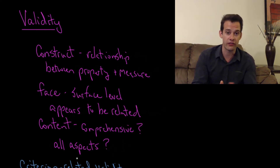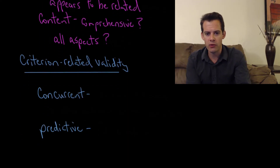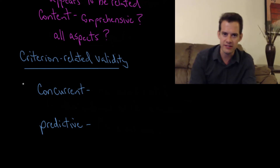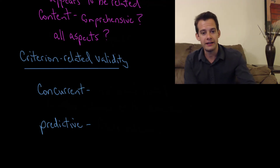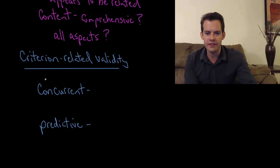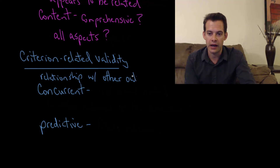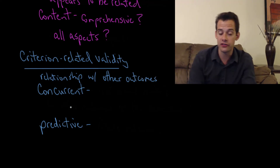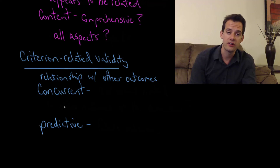That's the difference between face validity and content validity. The next two types of validity are related — they're both called criterion-related validity. The reason is that they both ask whether the assessment is actually related to some other criterion — in other words, whether there's a relationship with other outcomes. The first is concurrent validity, which asks: does it relate to other outcomes at the same time?